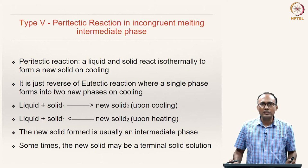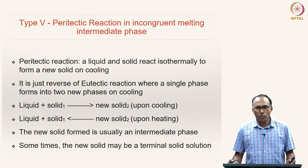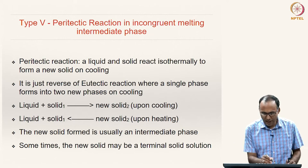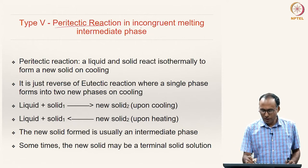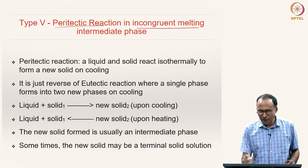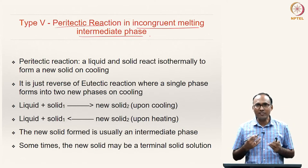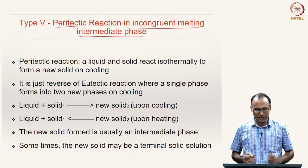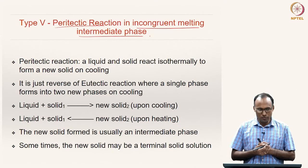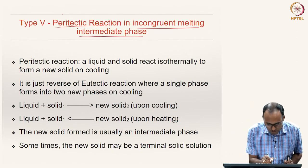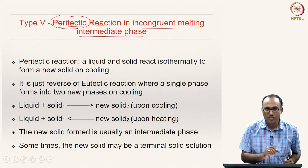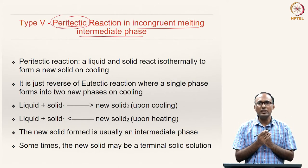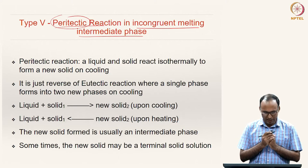Now let us look at the next type: Type 5, which shows a peritectic reaction in an incongruent melting intermediate phase. Here you have an intermediate phase, but it is not a congruent melting intermediate phase—it is an incongruent melting intermediate phase, in which we will see a special reaction called the peritectic reaction. We have already seen one special reaction called the eutectic reaction; now we are going to see another called the peritectic reaction.